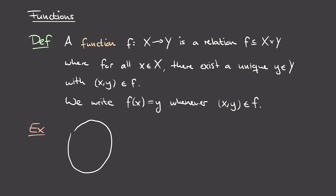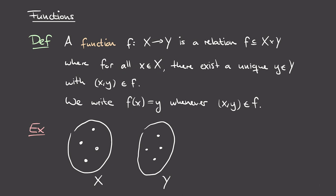It's best to illustrate this definition directly using an example. I'm representing my sets X and Y schematically with certain points. In the case of a relation, we draw a bunch of arrows between the points in X and the points in Y. But if we want to define a function, we need to choose our arrows more carefully. The first part of the definition says that for every x in X, there exists some y in Y such that the pair (x, y) is in the relation — so I have to draw an arrow starting at each point in X.